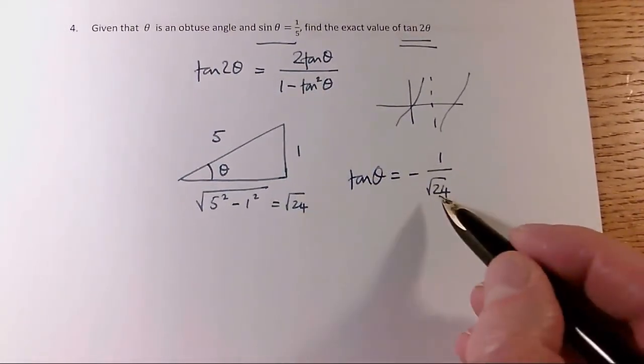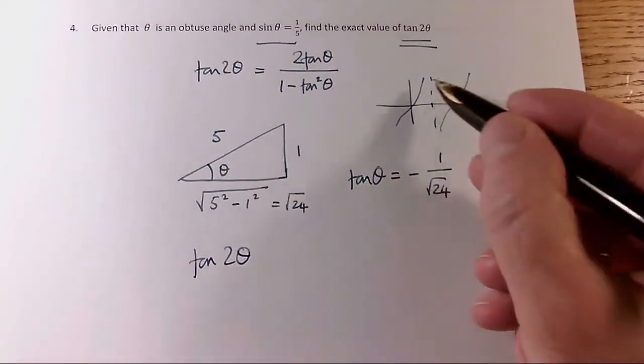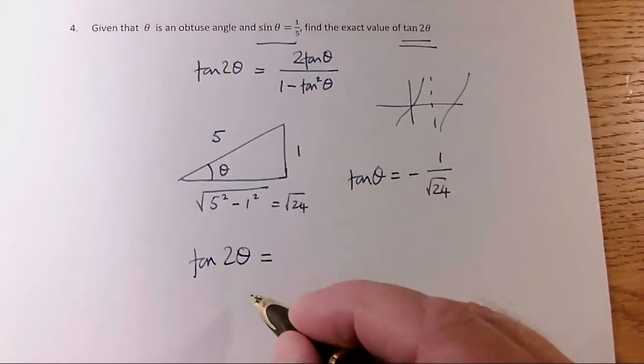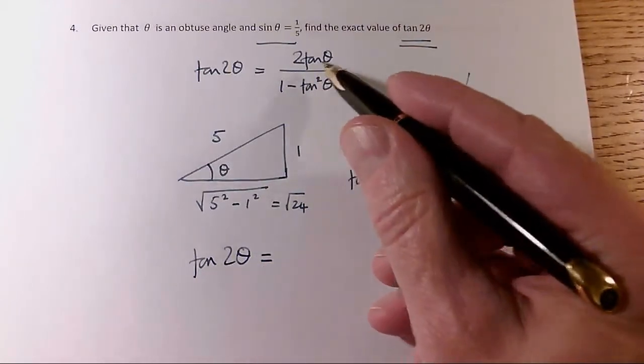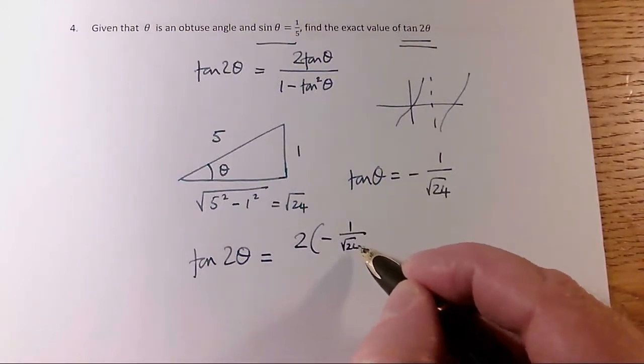So now I know what tan θ is, I can do tan 2θ. Now really, I probably should have done all of this stuff in scribble space. Never mind, I'll forgive myself this time. So tan 2θ equals 2 tan θ, so that's 2 times minus 1 over √24,